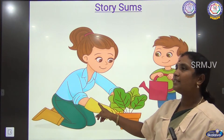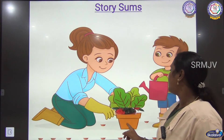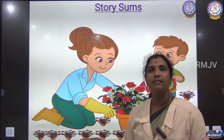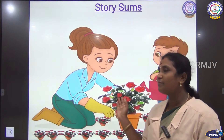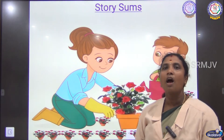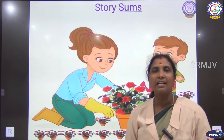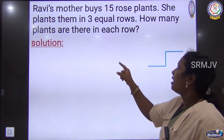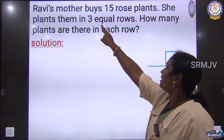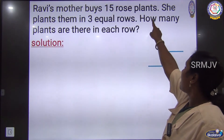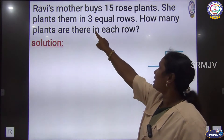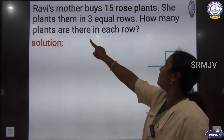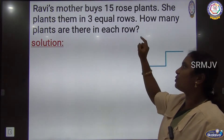Ravi's mother bought 15 rose plants and she planted them in 3 rows. From this we have to find how many plants she planted in each row. Ravi's mother buys 15 rose plants and plants them in 3 equal rows — how many plants are there in each row?